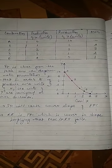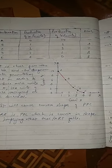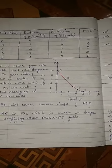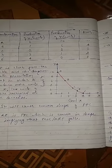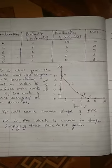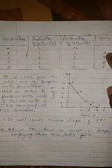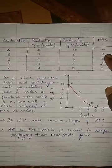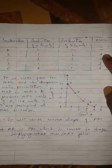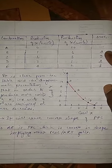In the diagram, AE is the PPC which is convex in shape, implying that MOC or MRT falls. As seen in the table, the MOC values are 4, 3, 2, 1 — so the MOC is decreasing, confirming the convex shape.